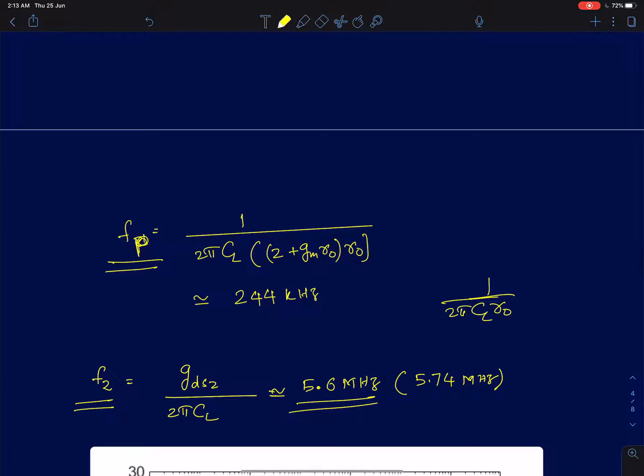I have shown here the calculations for poles and zeros. The dominant pole or the first stage pole is 244 kilohertz from calculations. That is 1 by 2π by CL into gm r0 squared. I have used an exact expression here. In fact, this is actually gm plus gmb. Then you get a value of around 244 kilohertz and the first stage zero should occur at 1 by CL r0 which is 5.6 megahertz. So this is what we predict.